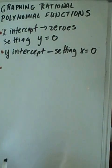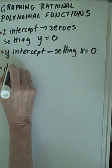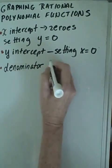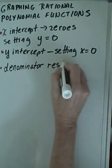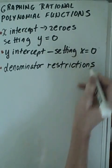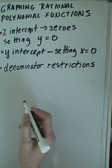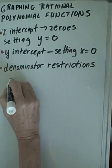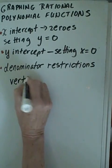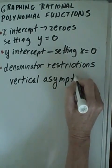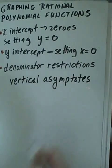Our third step that we look for, especially with rational polynomial functions, is our denominator restrictions. Remember our denominator cannot equal zero. So we want to find those numbers that will make our denominator zero. At this point where the restrictions occur, that is where we have what's called vertical asymptotes. And we'll talk more about what these are when we're doing the graphing part.